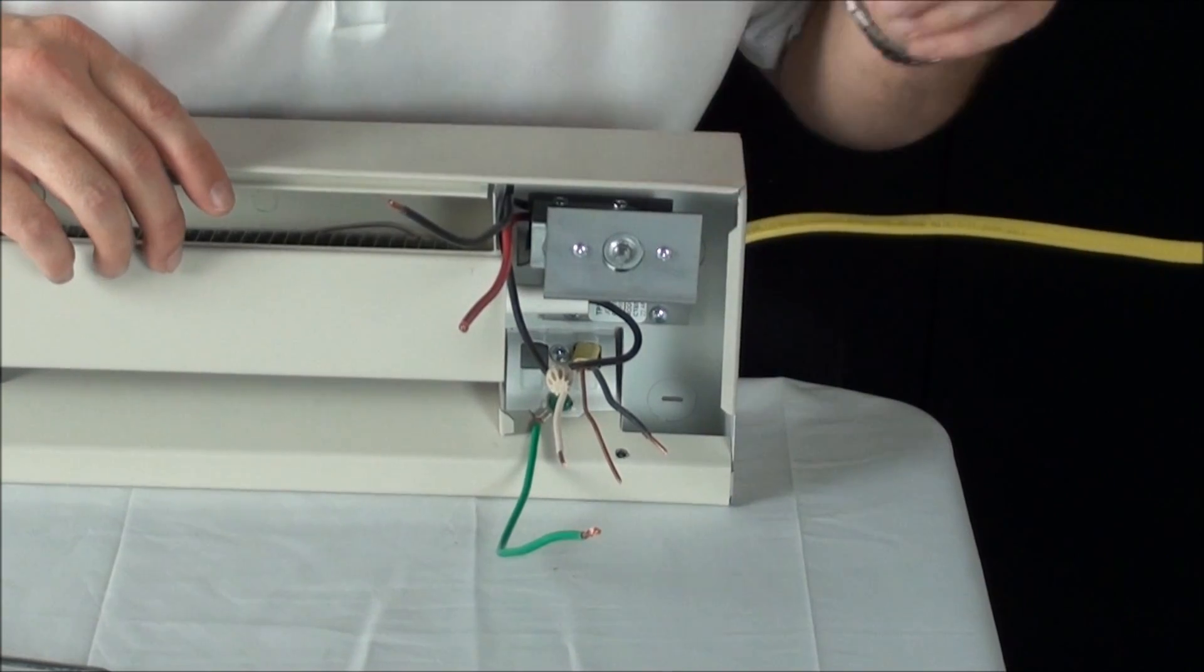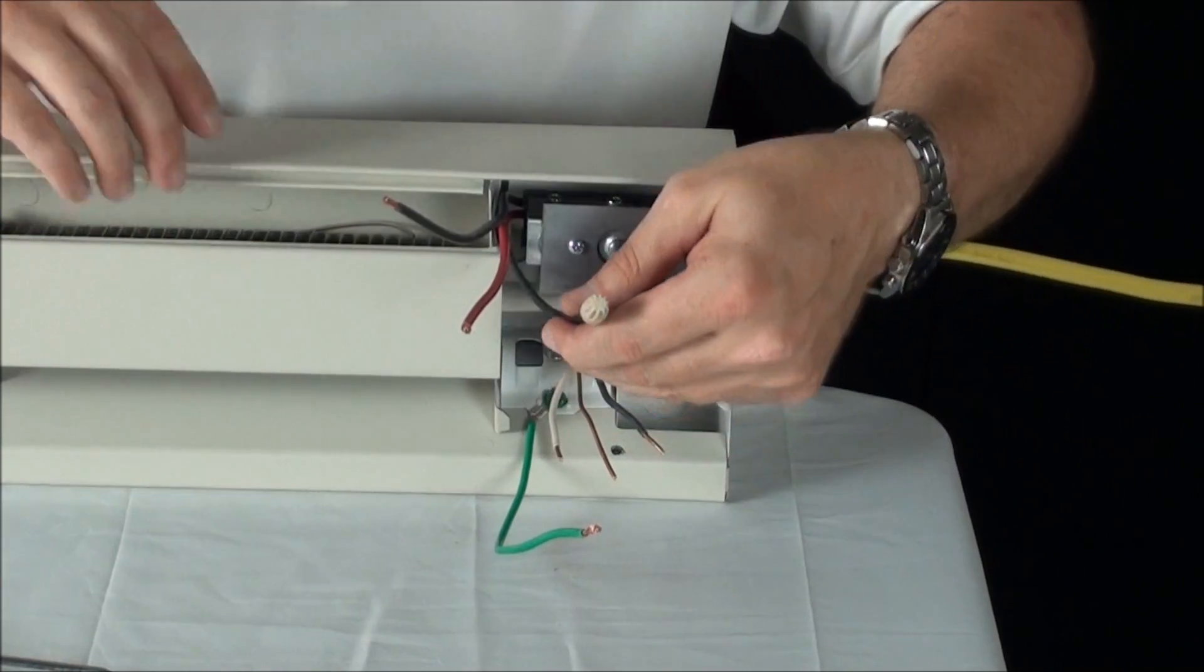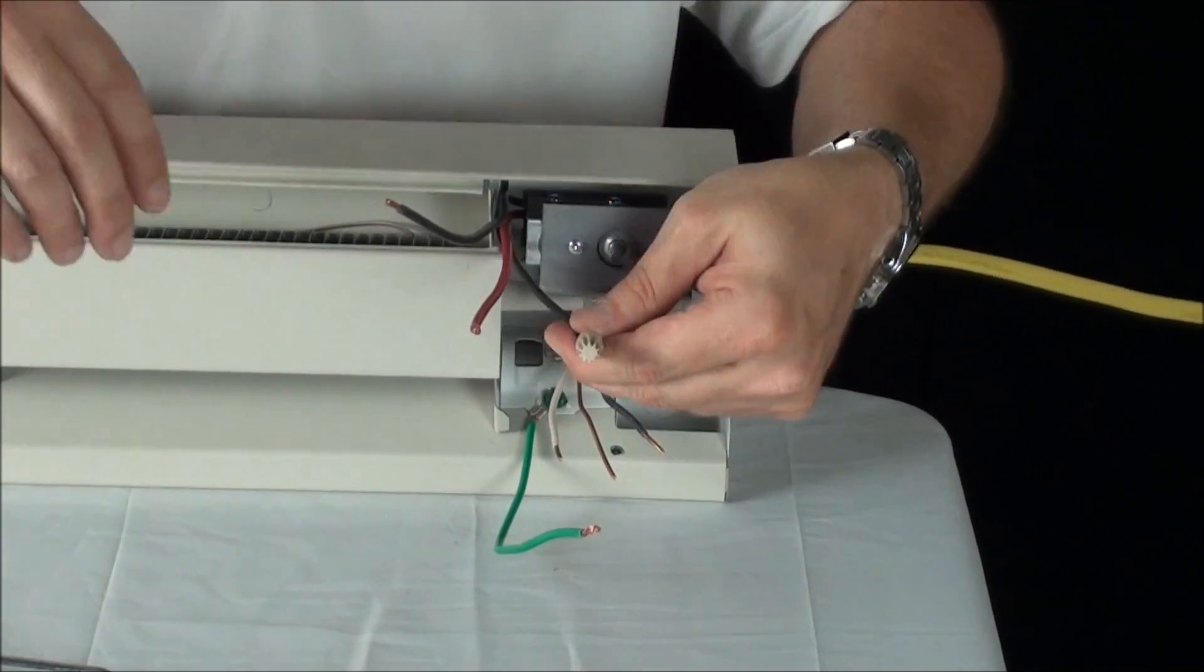Now we're going to wire the thermostat after it's been installed. This thermostat can be installed on either end of the baseboard.